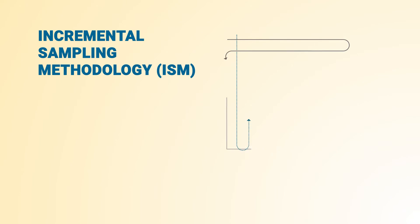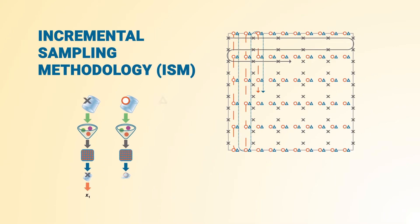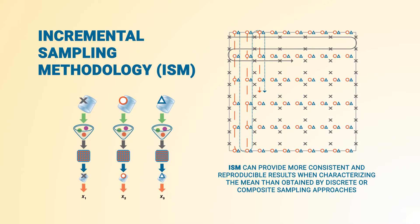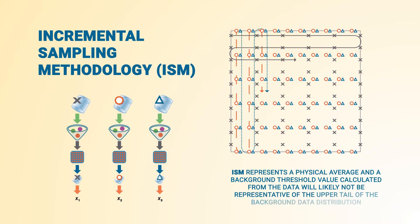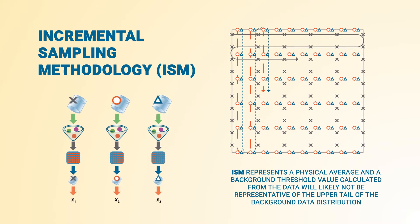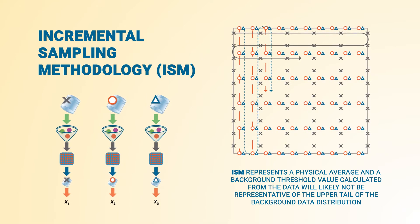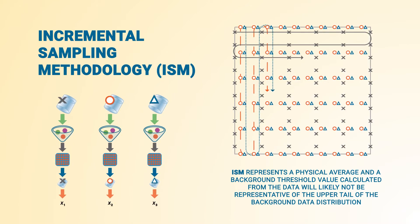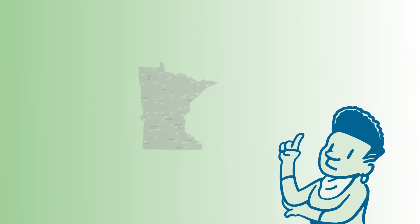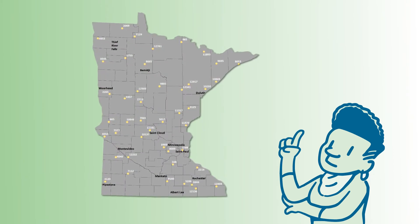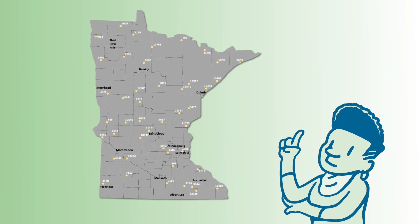ISM is a structured sampling and processing protocol for collecting numerous increments of soil from a defined area that are then combined, processed, and subsampled for laboratory analysis. ISM can provide more consistent and reproducible results when characterizing the mean than obtained by discrete or composite sampling approaches. However, ISM represents a physical average, and a background threshold value calculated from the data will likely not be representative of the upper tail of the background data distribution. See ITRC's Incremental Sampling Methodology update, ISM2, at ism-2.itrcweb.org for more information on incremental sampling.